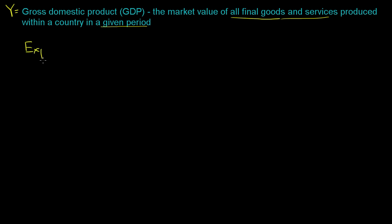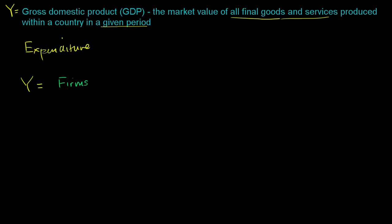So let's think about it from an expenditure point of view — to think about what are all the pieces. If we're thinking about expenditure, who are all of the players that might have spent money on final goods and services produced in our country? Well, you could have your firms. The firms might have spent money on these goods and services. You also have your households — they obviously could have spent some money on goods and services produced in this country.